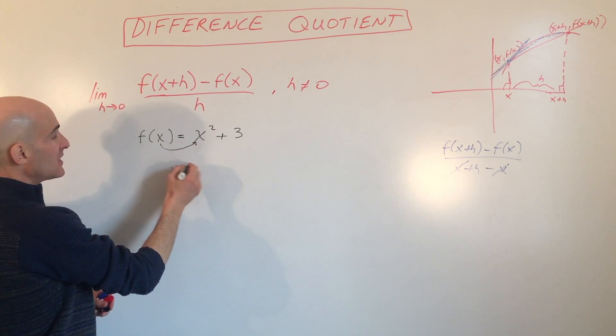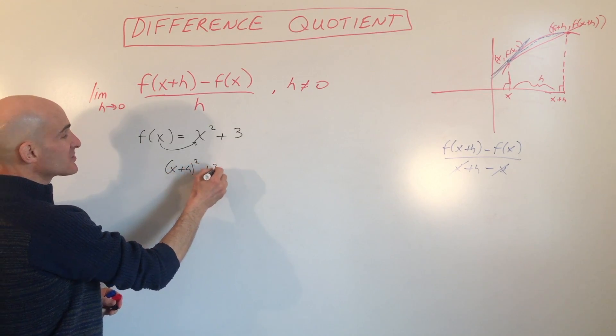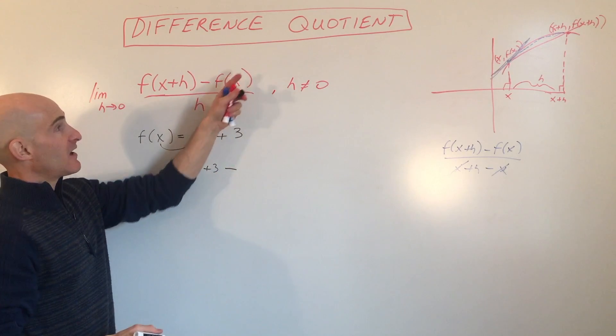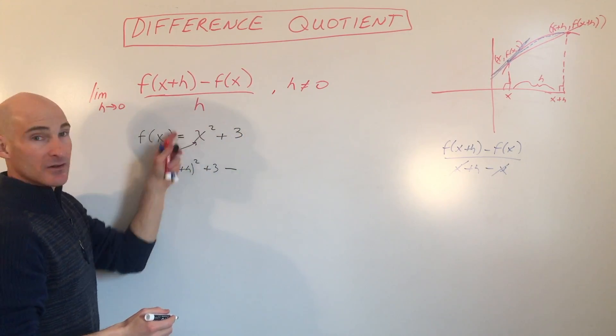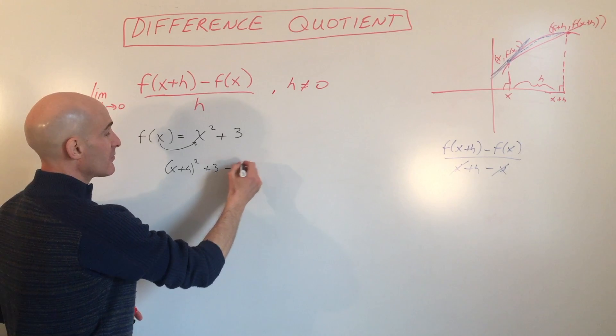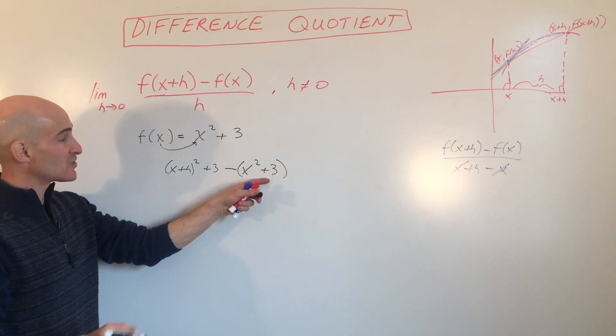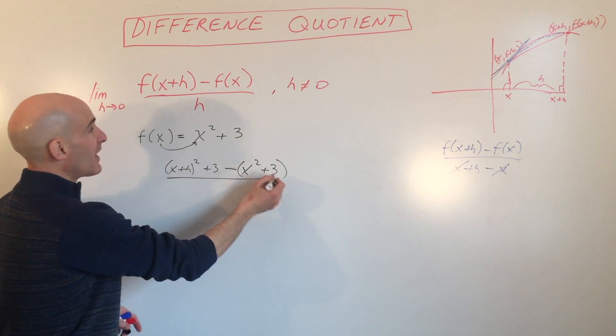we get (x+h)² + 3, that's this part, minus f(x), which is this entire function, minus x² + 3. I put it in parentheses so we treat it as a group, all divided by h.